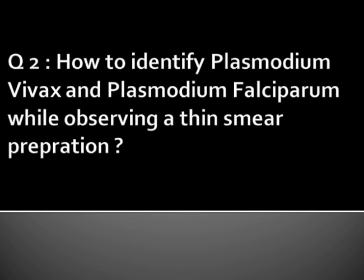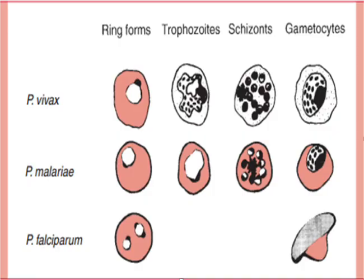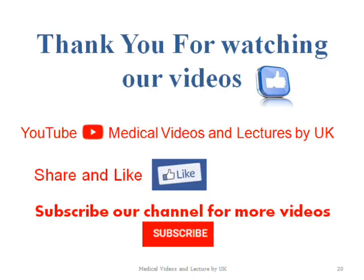Number 3: Plasmodium falciparum infected RBCs have two chromatin dots, while Plasmodium vivax usually has a single dot. The diagram is taken from Sherris Medical Microbiology, page number 712. This will also help you in differentiating the morphological features of Plasmodium vivax, Plasmodium falciparum, and Plasmodium ovale. Comment if you have any queries or suggestions.